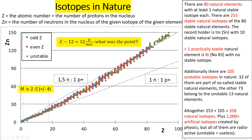We have 80 natural elements with at least one natural stable isotope each. A stable isotope means it doesn't undergo any radioactive decay, or at least none that is measurable. But there are many more — 253 stable natural isotopes for those 80 natural elements.